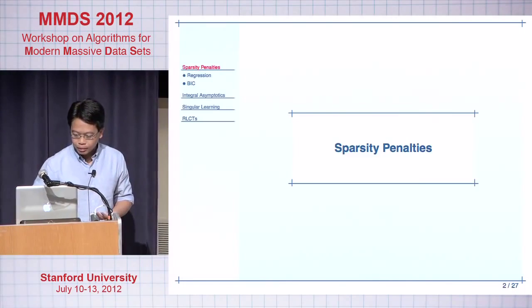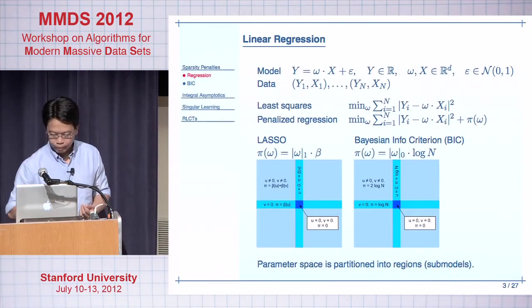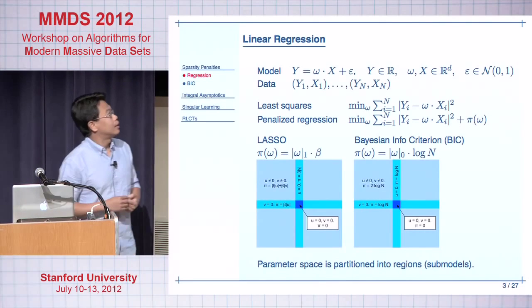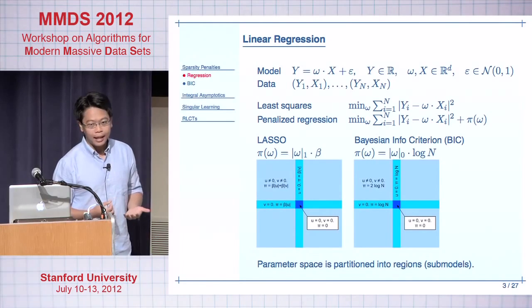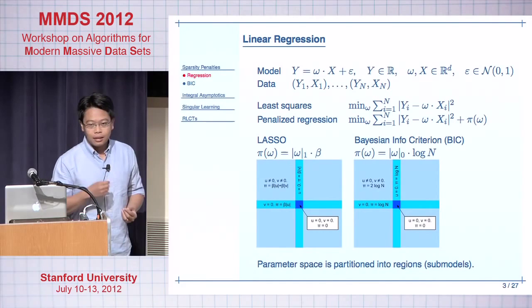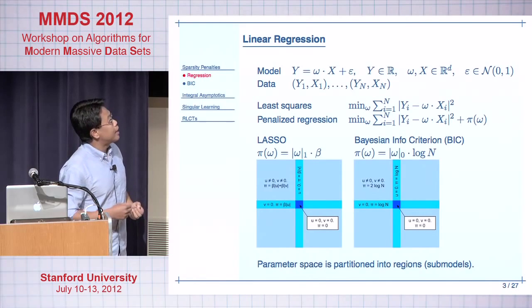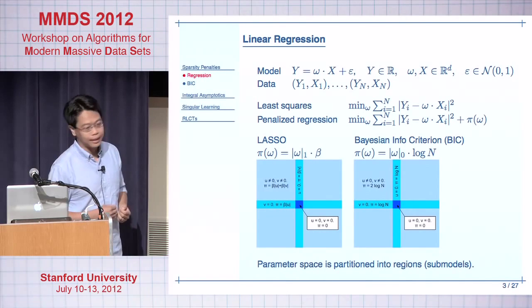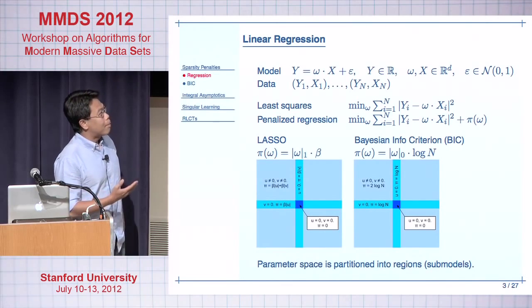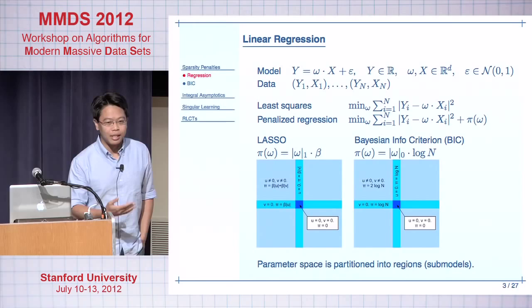Let me start off with a motivating example. I'll be looking at sparsity penalties in model selection. For instance, if we look at the linear regression problem: suppose I have a random variable y that I want to write as a linear combination of some random variables x, and let's say there are d of them, and the error epsilon is normally distributed. Suppose I have n data samples y1, x1 to yn, xn. The typical least squares solution is to minimize the sum of squares of the residues, which is the same as maximum likelihood estimation.